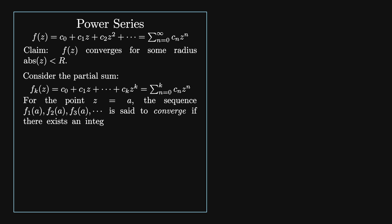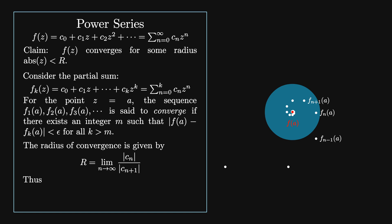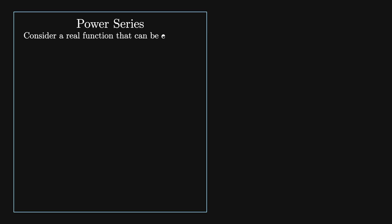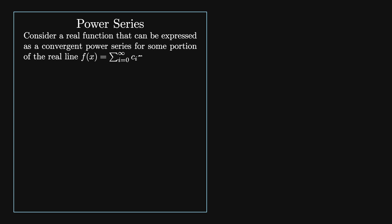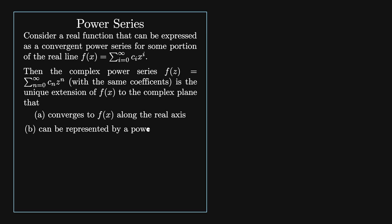We can show that the power series converges to f of a if there exists an integer m such that the absolute value of f of a minus fk of a is less than some positive epsilon, no matter how small, for all k greater than m. The radius of convergence is given by the limit as n goes to infinity of the absolute value of cn divided by the absolute value of cn+1. This means that f of z can be arbitrarily well approximated by the polynomial fn of z within a disk given by the absolute value of z less than r. The complex power series with the same coefficients is the unique extension of f of x to the complex plane that converges to f of x along the real line and can be represented by a power series in z.